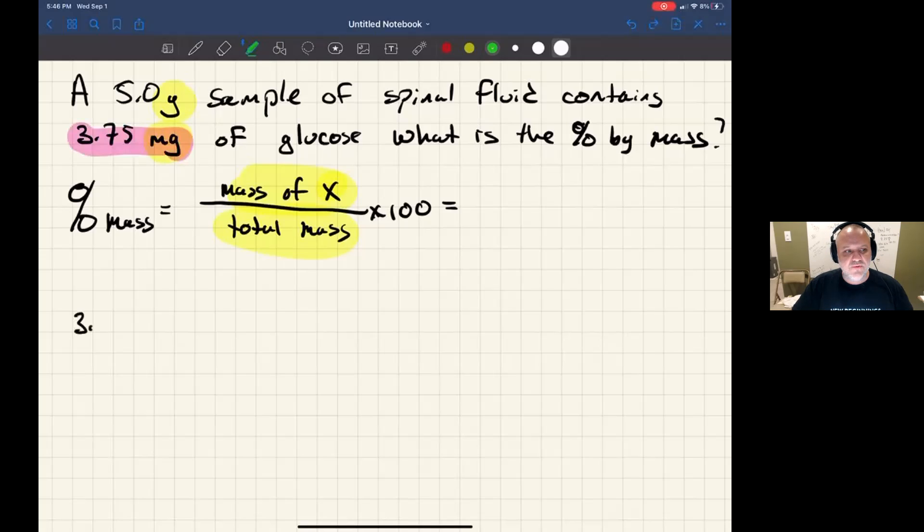In this case, I've chosen to convert the milligrams to grams. 3.75 milligrams, we know that there's 1 milligram for every 10 to the minus 3 grams, so I get 0.00375 grams.